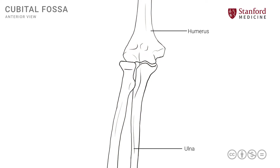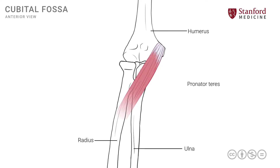The humerus, the ulna, and the radius participate in the formation of the elbow joint. The first key structure of the cubital fossa is a muscle known as the pronator teres muscle. This muscle has its attachment onto the medial epicondyle of the humerus more proximally, and then the fibers extend laterally and inferiorly to attach onto the middle third of the radius.